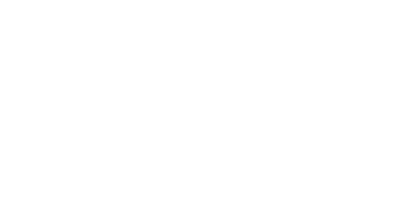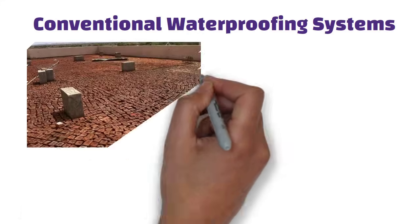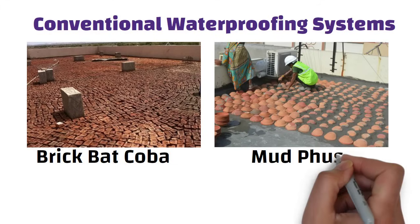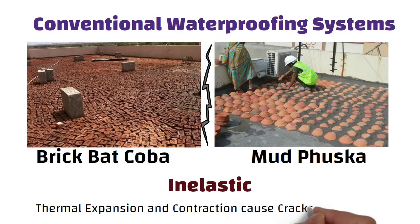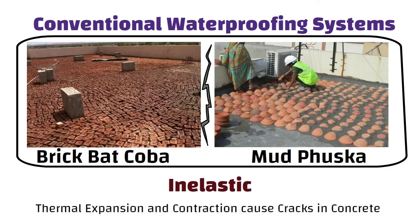Let us discuss about conventional waterproofing systems like brickbat coba and mud fusca. These systems are inelastic and thus they are bound to get cracks in them over a period of time. Thermal expansion and contraction cause cracks in the concrete and also in materials like brickbat coba and mud fusca.